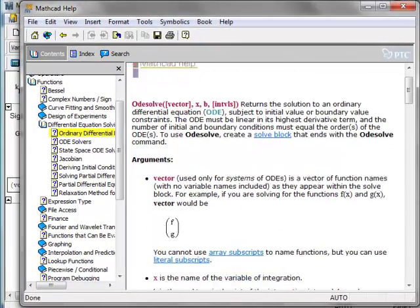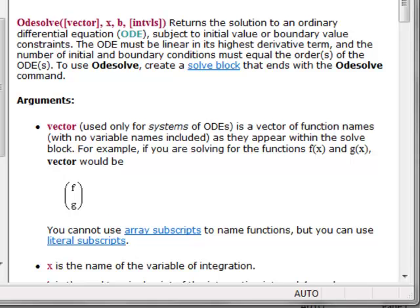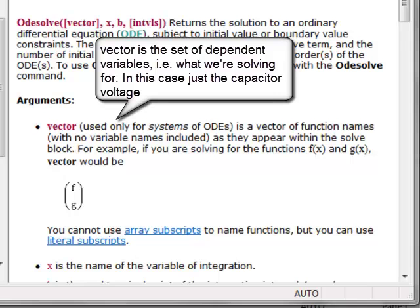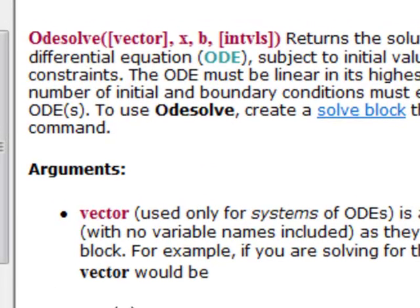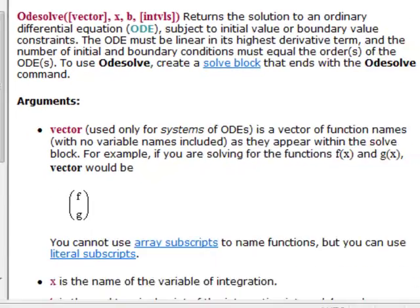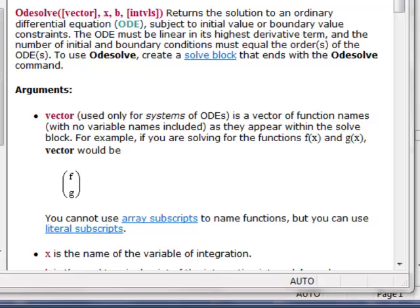And here we're given information on this. These are the arguments. The first argument is, in general, a vector because you could have a set of first-order differential equations. In our case here, we have just one first-order differential equation. X is the independent variable, so if we're evaluating something that has derivatives with respect to time, we'd put T for time. And variable B is the end time of the simulation, so if we're simulating time, basically it's where X would be T for time. If we set B to 10, then it would simulate to 10 seconds.